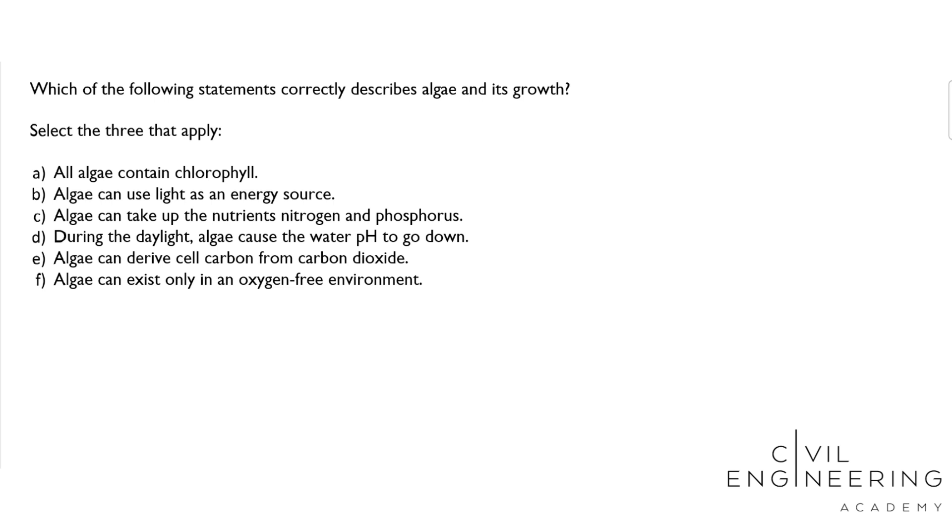D: During the daylight, algae cause the water pH to go down. E: Algae can derive cell carbon from carbon dioxide. And F: Algae can exist only in an oxygen-free environment. The PE reference handbook probably won't help us in this problem.